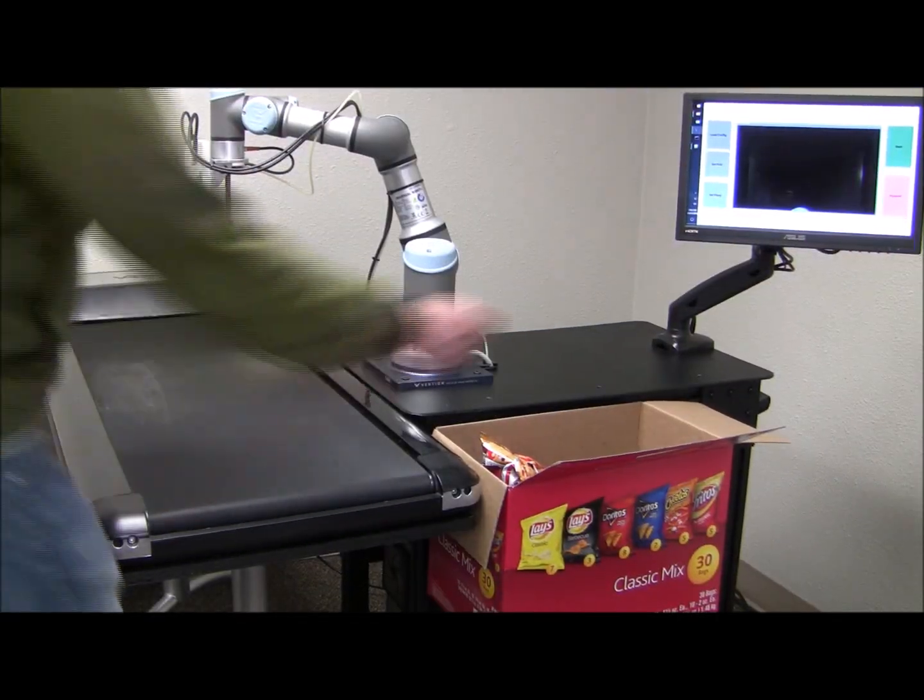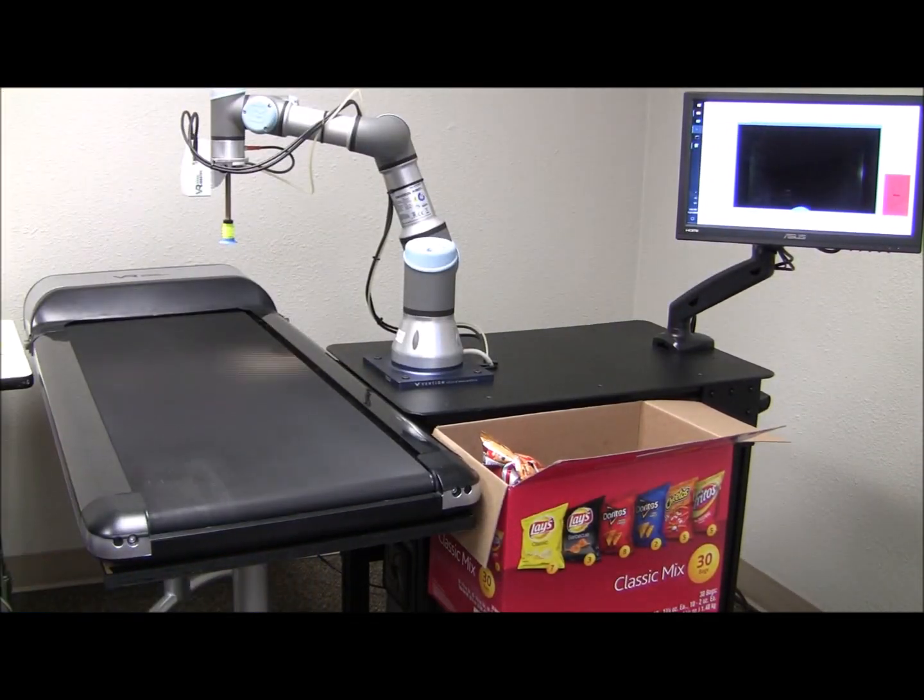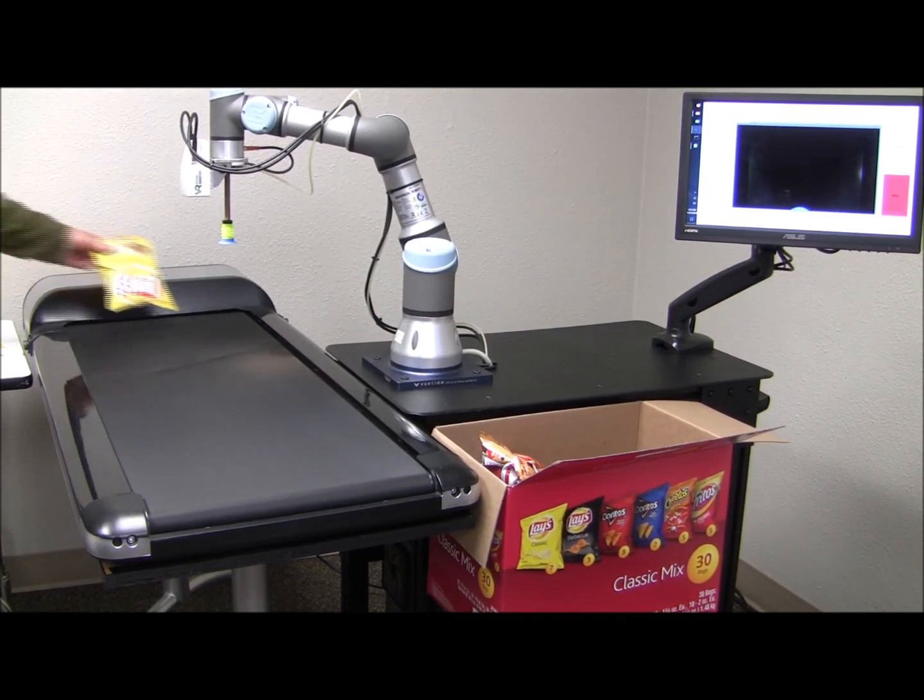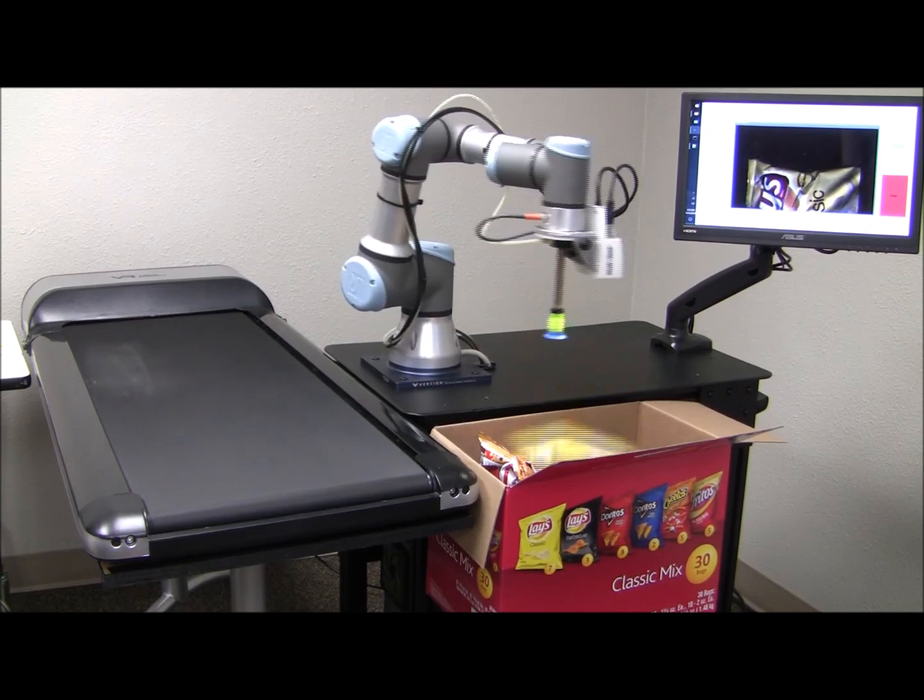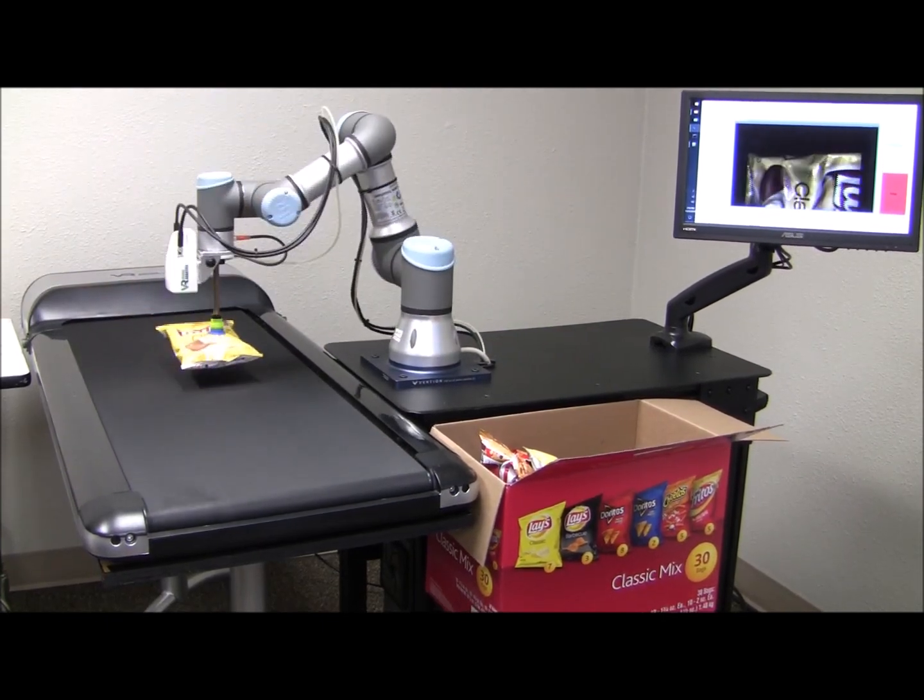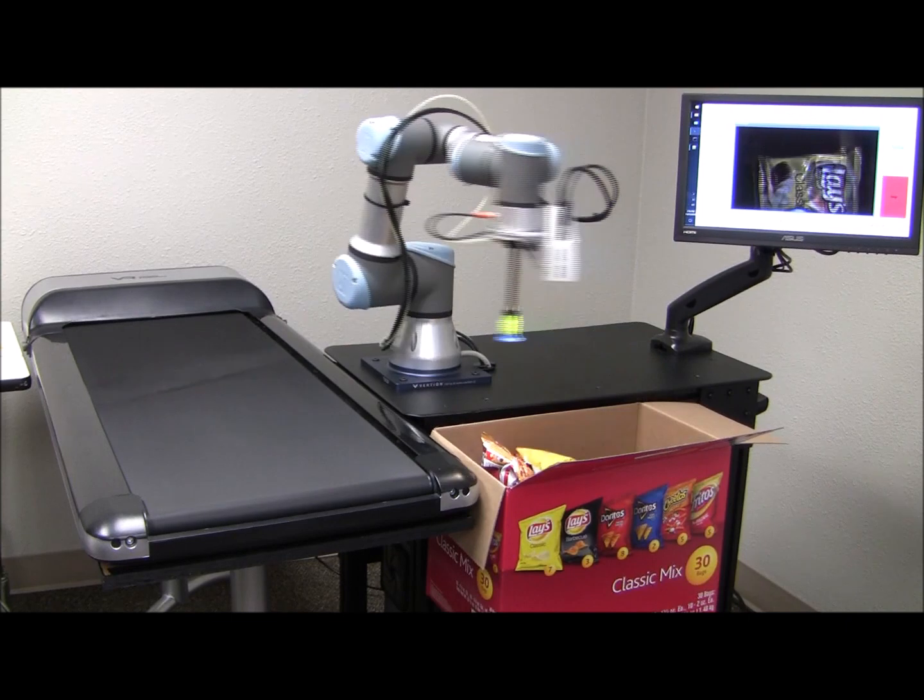Here's another example where we are picking bags of chips from a conveyor and putting them into a box, but the conveyor has no instrumentation. The system detects the speed of the moving bag in order to pick it up. You can see the camera's detection of the bag on the quick-pick screen at the top right.